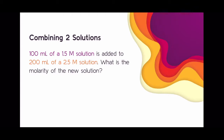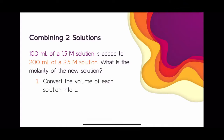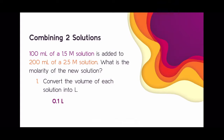I highlighted the first solution in purple and the second solution in orange. The first step is to convert the volume of each solution into liters — convert 100 milliliters and 200 milliliters into liters. Pause the video if you need to. You should get 100 milliliters equals 0.1 liters and 200 milliliters equals 0.2 liters. To convert from milliliters to liters, move the decimal three spaces to the left.